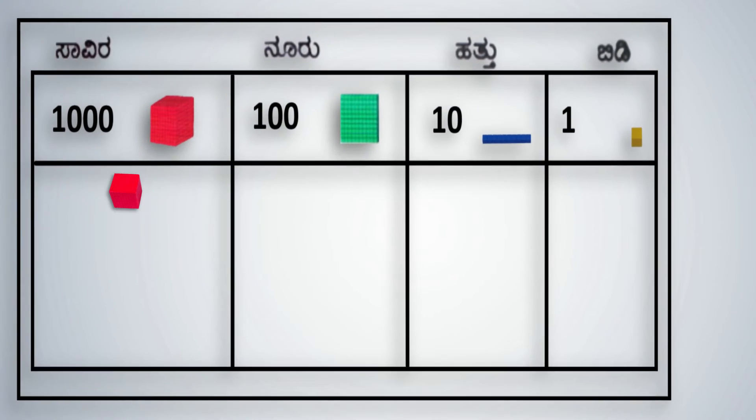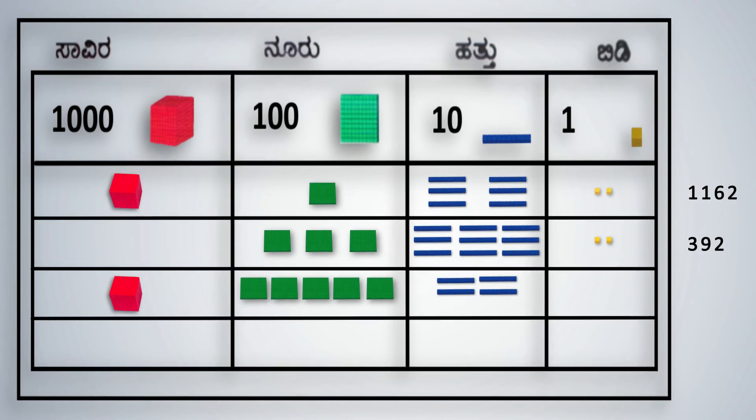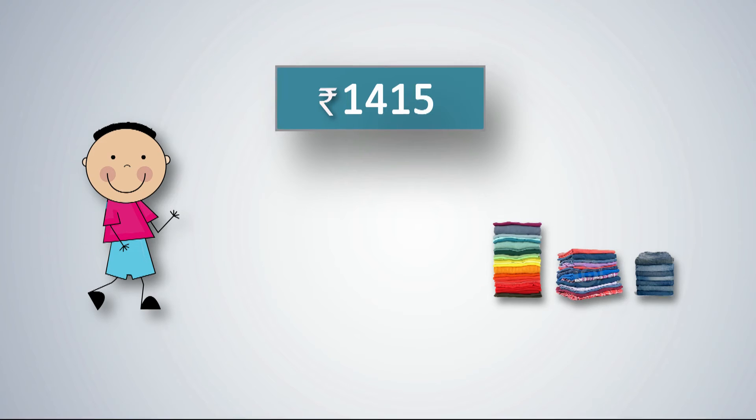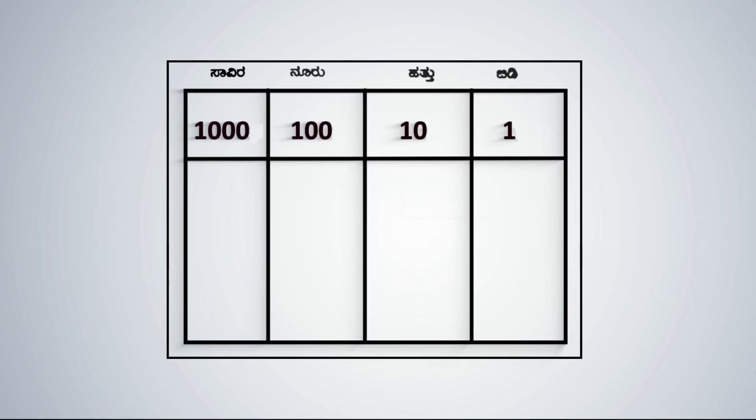To reinforce this concept, give a handful of cubes, rods, plates, and a big cube. Now ask students to place them on the place value mat and write down the number it represents. If we have to pay a shopkeeper 1,415 rupees for buying some clothes, it is not convenient to carry the entire amount in 1 rupee notes. Grouping by 10s makes this easier. 10 one rupee notes are equal to 1 ten rupee note, 10 ten rupee notes are equal to 100 rupee note, and 10 hundred rupee notes are equal to 1,000 rupee note.